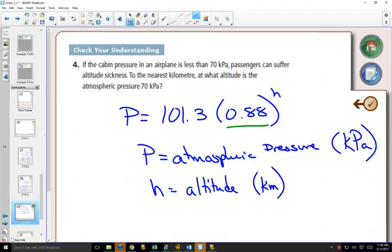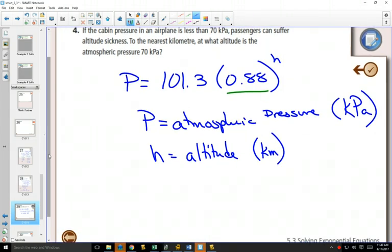So if cabin pressure in an airplane is less than 70 kilopascals, passengers can suffer from altitude sickness. At what altitude is the atmospheric pressure 70 kilopascals? When we put things into this equation, we know that the pressure is 70.